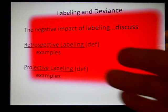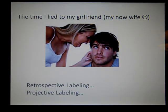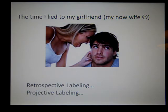So I quickly became the victim of retrospective labeling. Retro means before or prior. Retrospective labeling involves judging someone's past or history based on a present deviance. I'm lying to my girlfriend right now — that's the deviance. So retrospectively she goes back and says, 'You lied to me about this — what else have you lied to me about before?' And I said nothing, because honestly I had not ever lied to her.